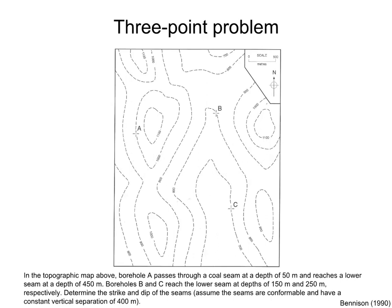Let's look at this example. In the topographic map, borehole A passes through a coal seam at a depth of 50 meters and reaches a lower seam at a depth of 450 meters. Boreholes B and C reach the lower seam at depths of 150 and 250 meters, respectively. Determine the strike and dip of the seams, assuming they are conformable and have a constant vertical separation of 400 meters.